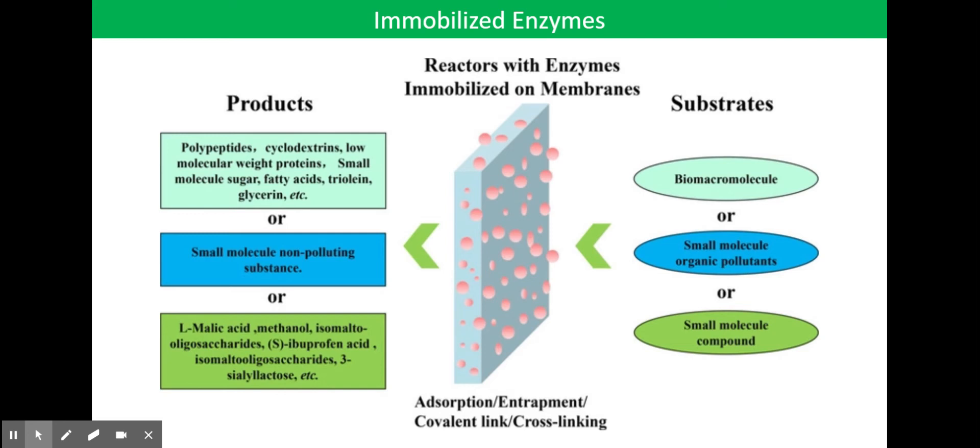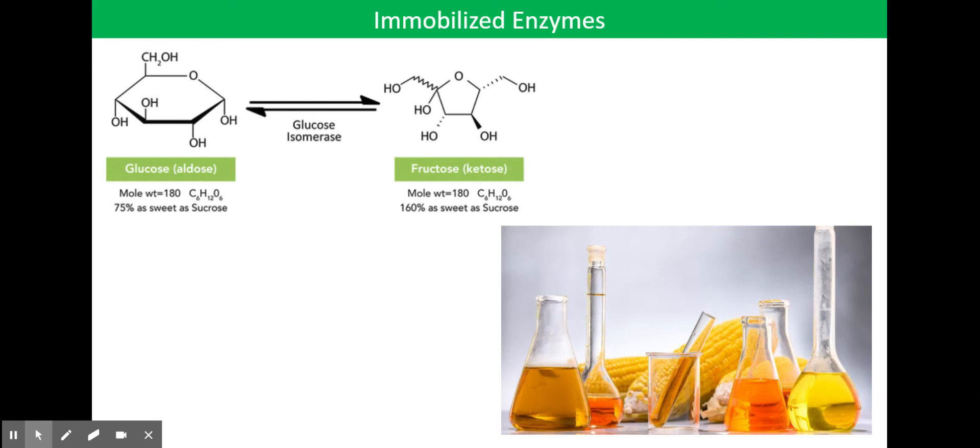The first one being glucose isomerase. Glucose isomerase converts glucose to fructose. It's probably the most widely used enzyme because of the number of applications of the syrup produced.